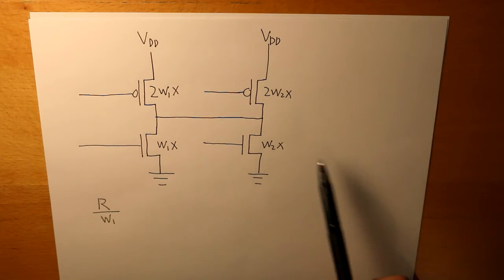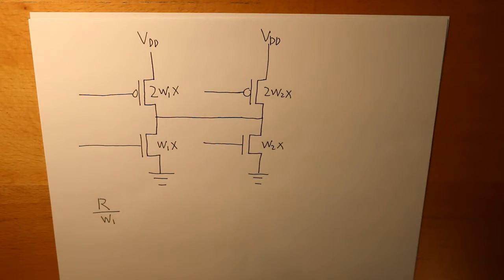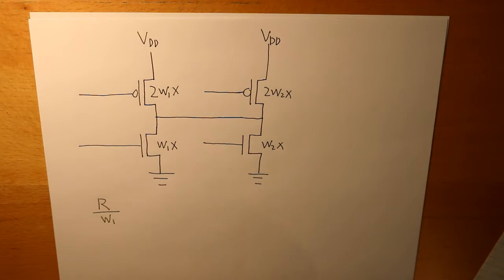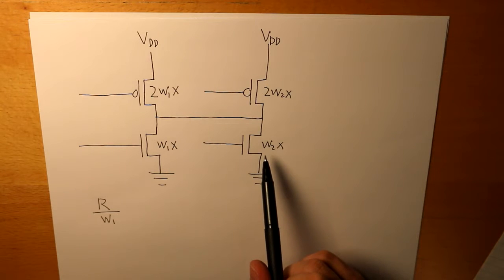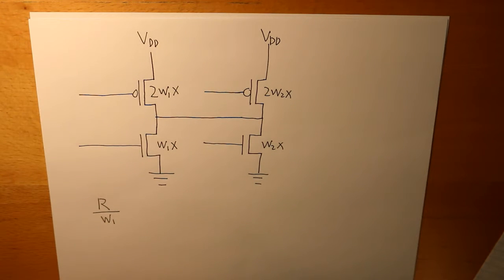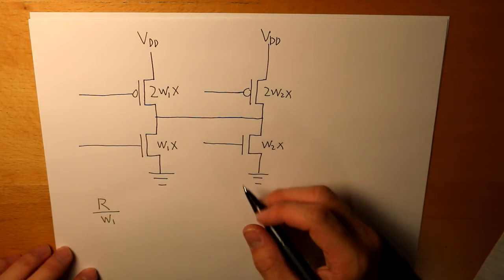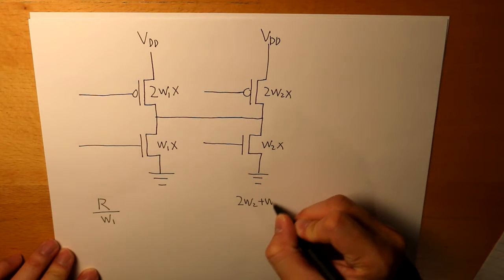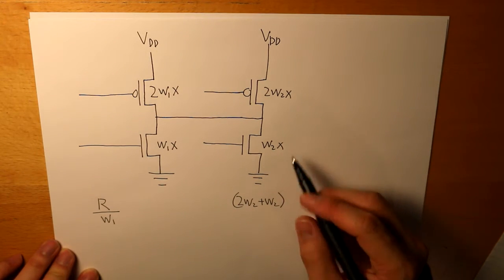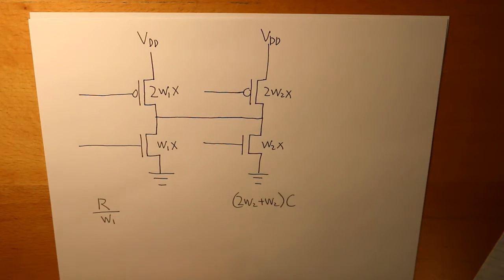For our capacitance, it's a little different. We take the width of the PMOS and also the width of the NMOS and add them up, then multiply by the unit NMOS capacitance. So what we have is 2W2 plus W2, and we multiply that by the capacitance of the inverter.